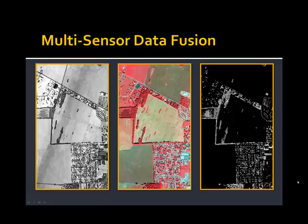One of the great things about eCognition software is it allows us to do true multi-sensor data fusion. Here are some examples of the remotely sensed data we used. On the left, LiDAR intensity data — the strength of the signal returned to the sensor — which does change relative to scan lines, as you can see in the scan line seams where tiles were mosaicked. In the center, the color infrared aerial imagery. And on the right, the normalized digital surface model (NDSM) depicting the height of features relative to the ground.